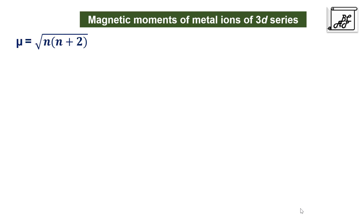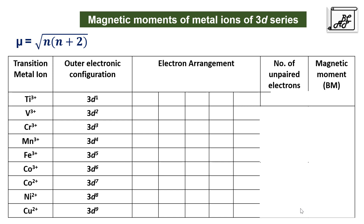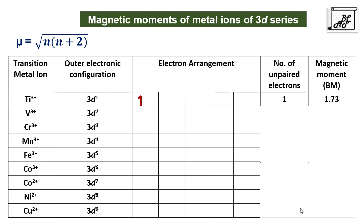Let us use this formula to calculate the magnetic moments of various 3d electronic configurations. In the first column we have transition metal ions and in the second column we have their corresponding outer electronic configurations. For 3d¹ there is one unpaired electron and its magnetic moment is calculated as 1.73 using √(n(n+2)). For 3d² (Ti³⁺) there are two unpaired electrons, magnetic moment is 2.83. For chromium with 3 unpaired electrons the magnetic moment is 3.87.